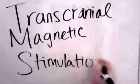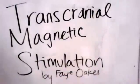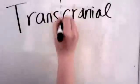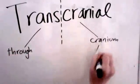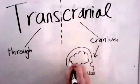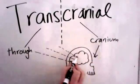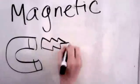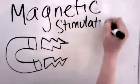TMS, transcranial magnetic stimulation. It's a method of using magnets to stimulate the brain through the skull. Transcranial means that something is passing through the cranium, which is the part of the skull that encases the brain. You probably know what a magnet is, but in the context of TMS and brain stimulation, what do magnets do?